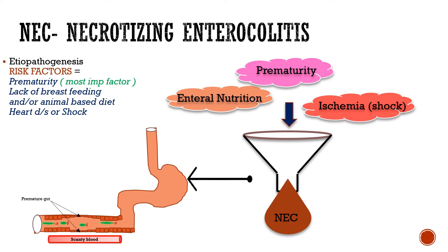This diagram of the gut shows mucosa lining the gut, which is thinned out because of prematurity. You can also see bacteria growing in the gut along with scanty blood supply. All these factors promote inflammation in the gut, leading to necrosis of the mucosa and further spread of the disease.